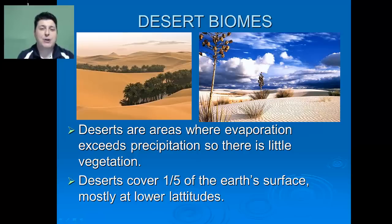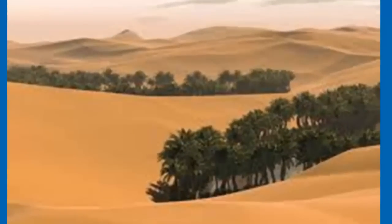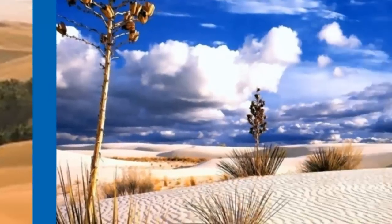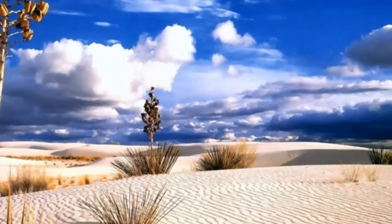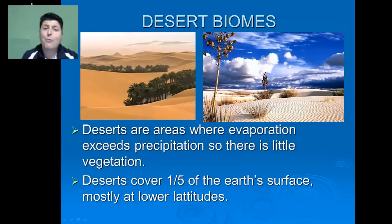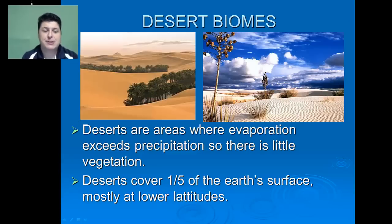The first biome that we'll examine is the desert biome. Deserts are classified as regions where evaporation will exceed precipitation, so there's going to be very little vegetation. Deserts will cover one fifth of the Earth's surface, mostly at the lower latitudes, around 30 degrees north and 30 degrees south.